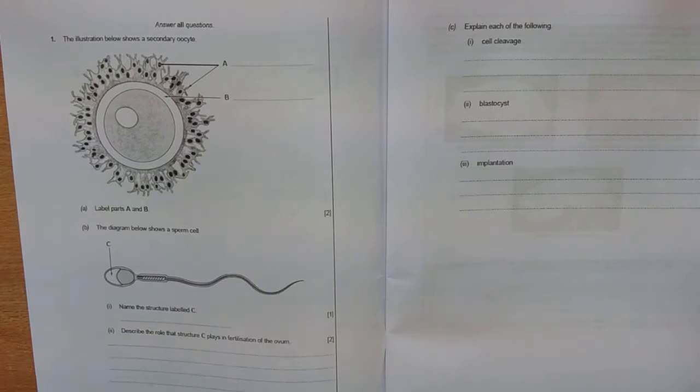Component 2 Resip. Question 1 - we've got a secondary oocyte and you should know the structure of this and just be able to name the layers.